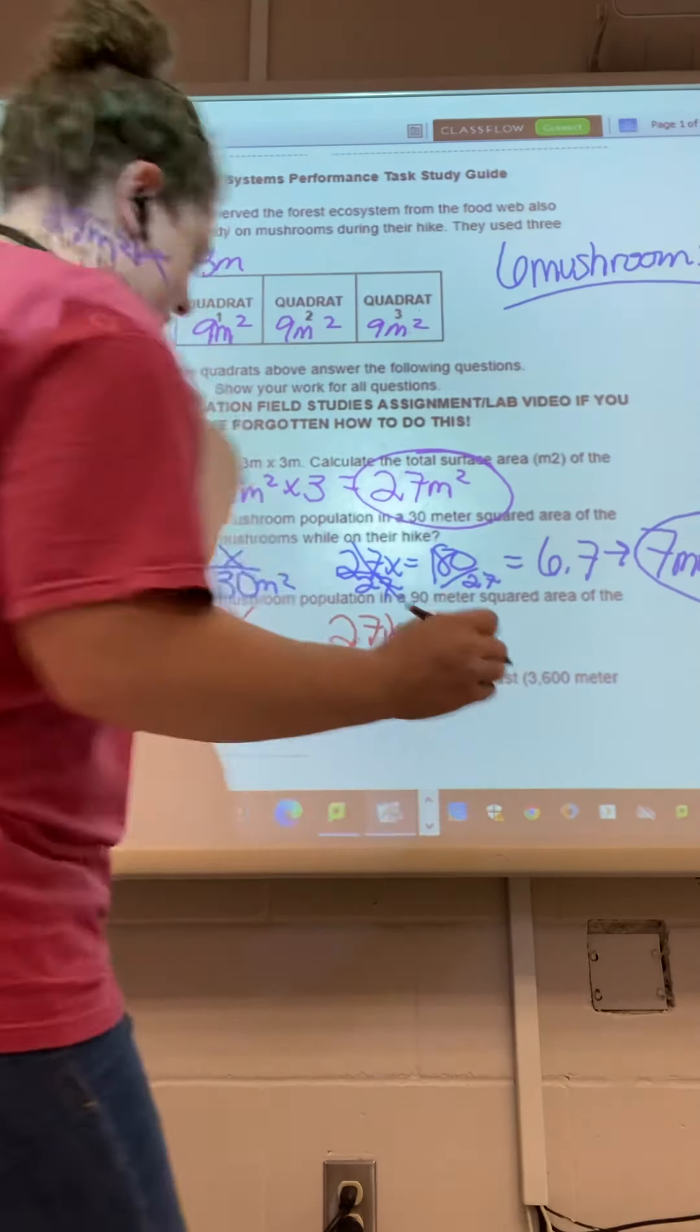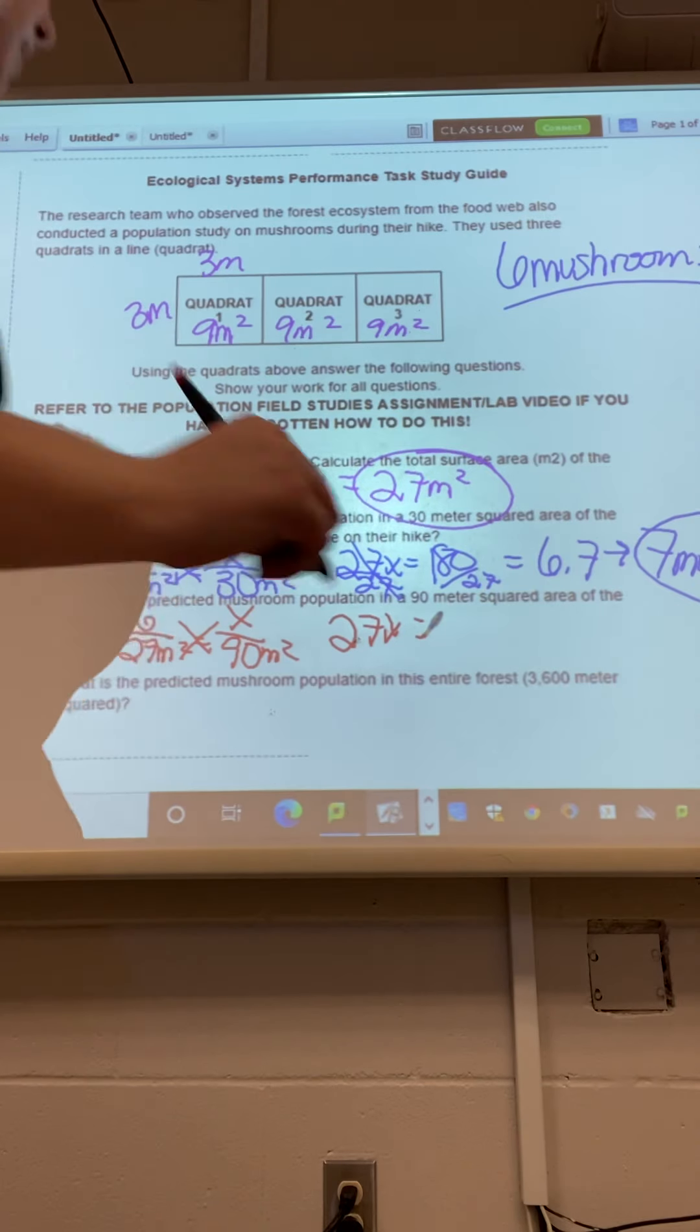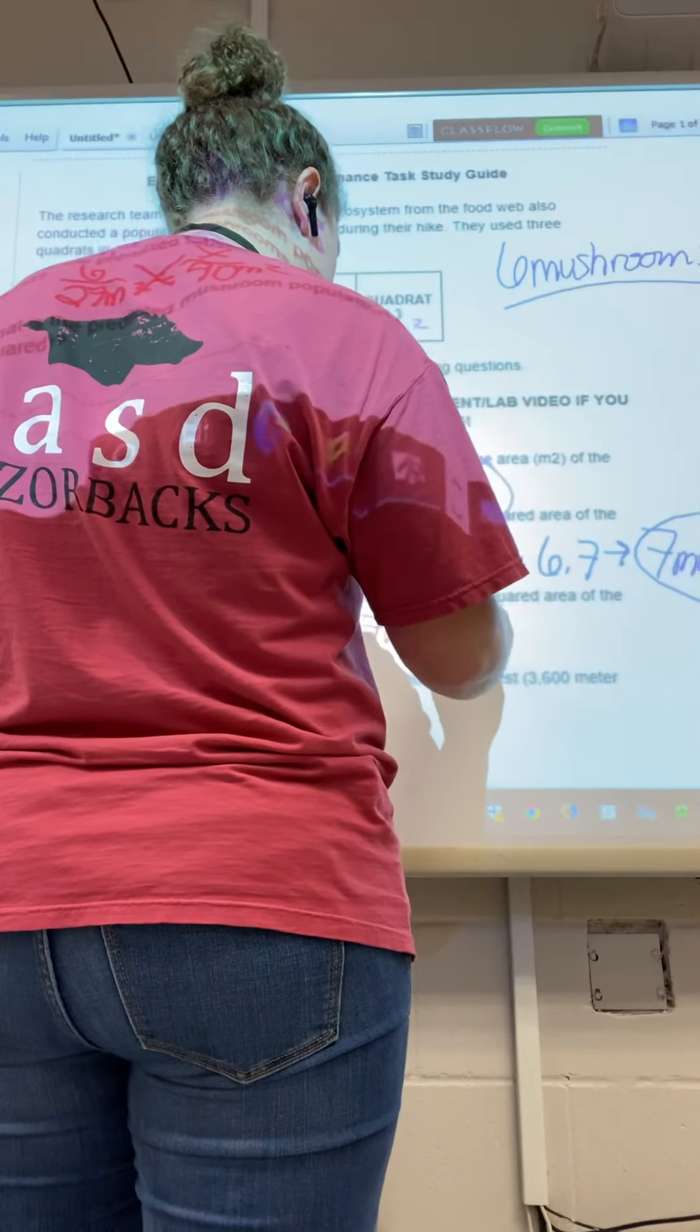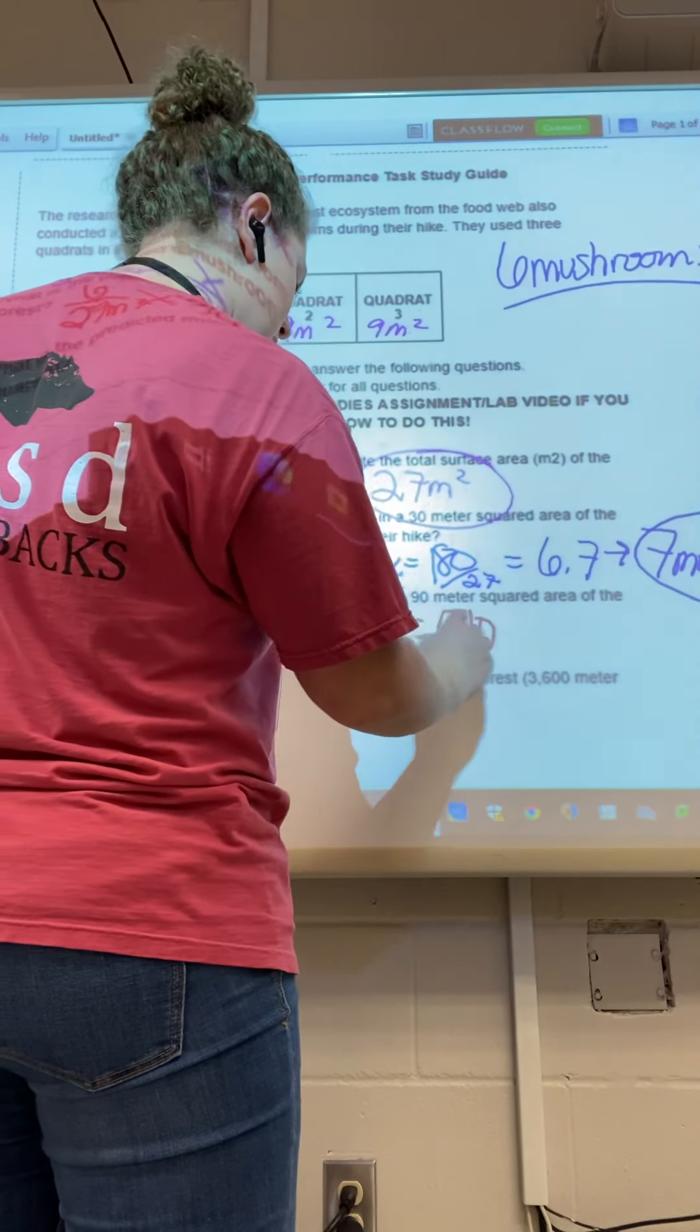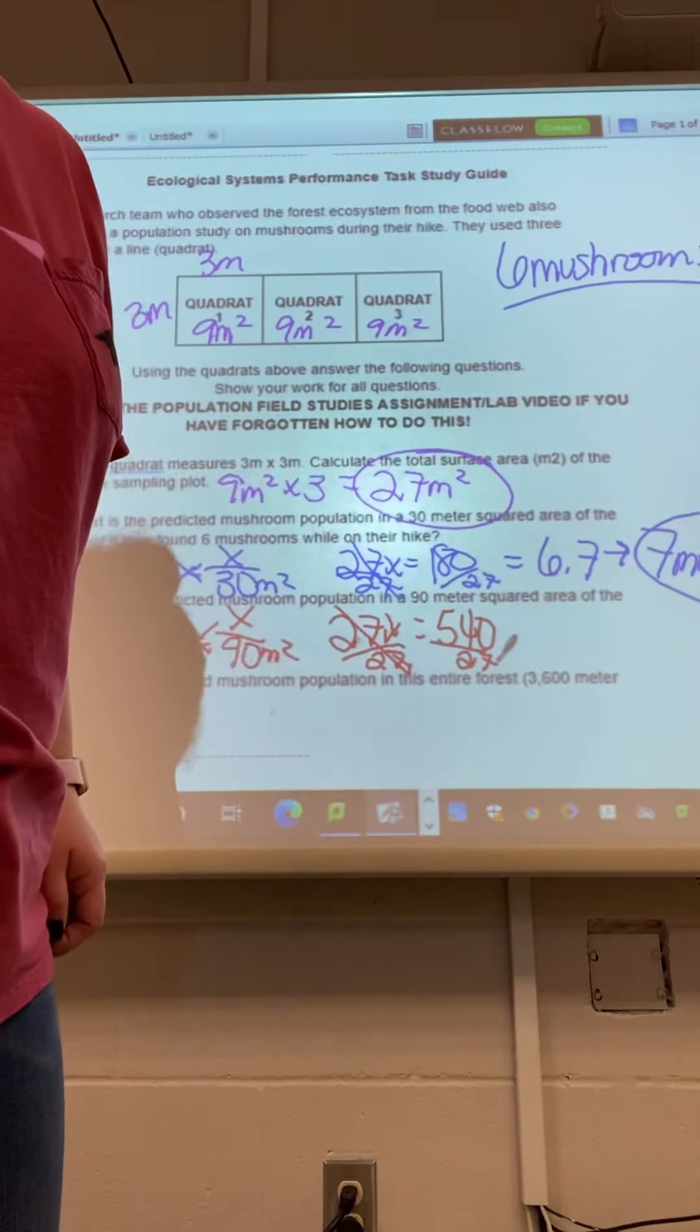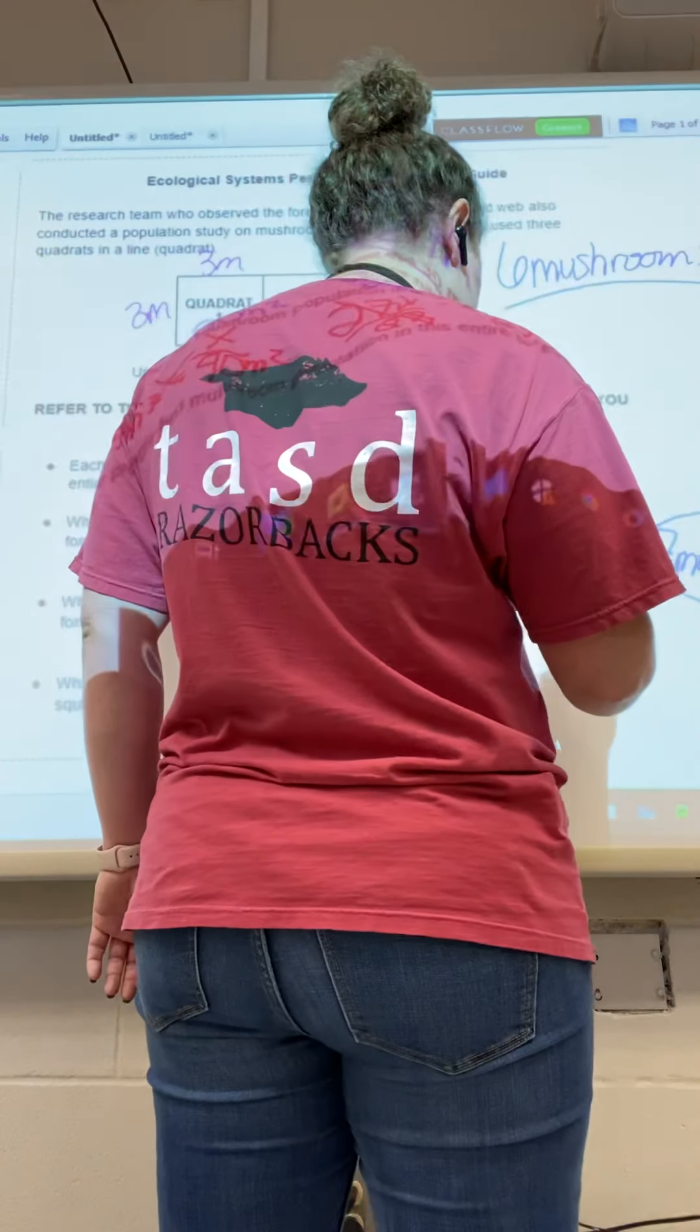27x equals, I think it's 540, but I don't want to mess up. Yep, 540. Divide both sides by 27. Just got you some good old fashion algebra. 20 mushrooms.